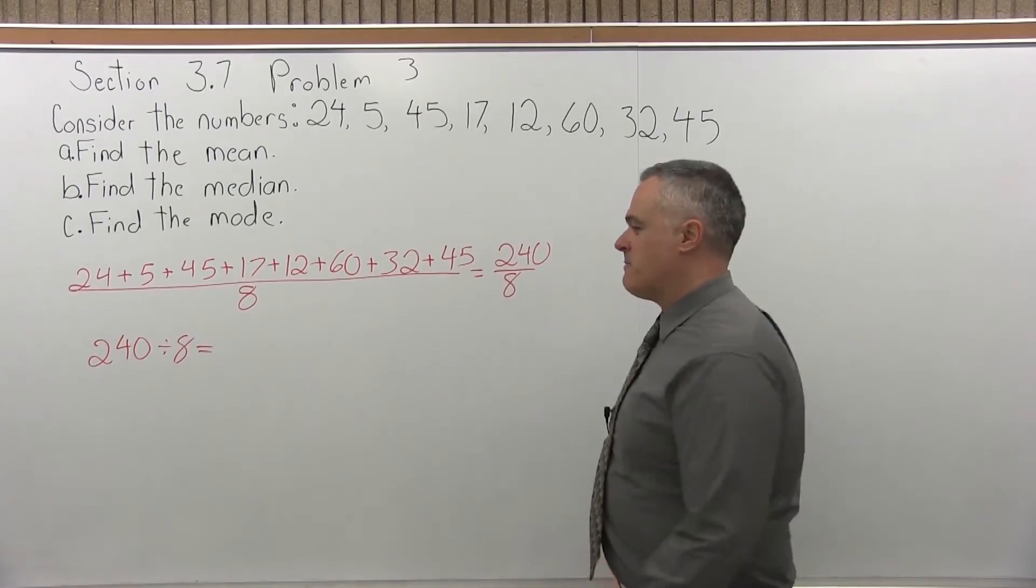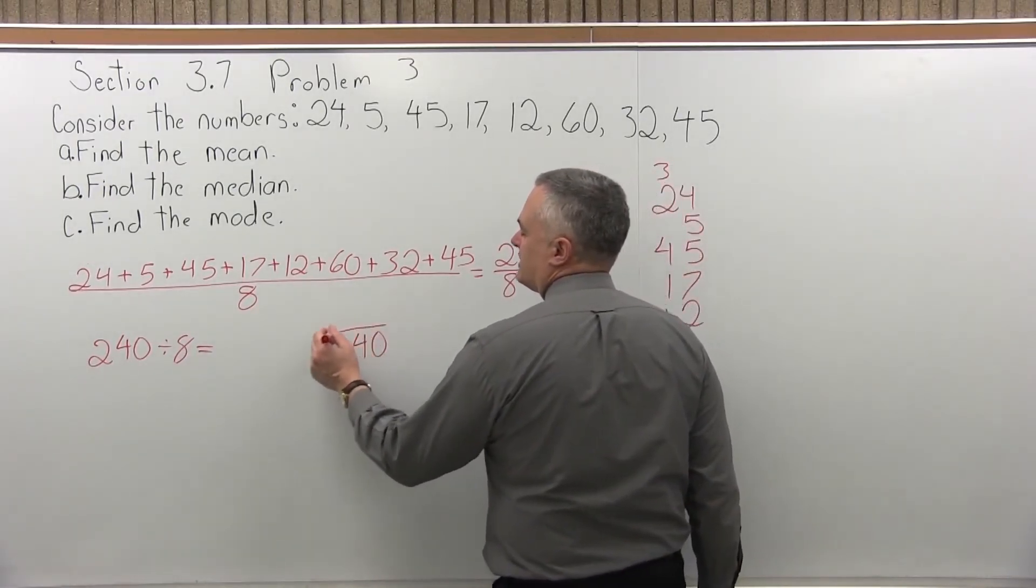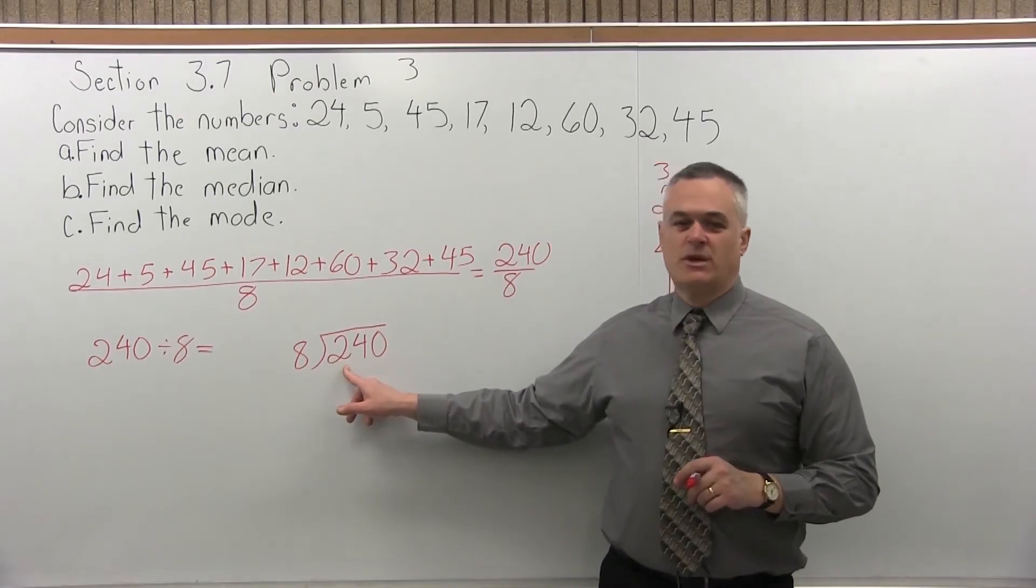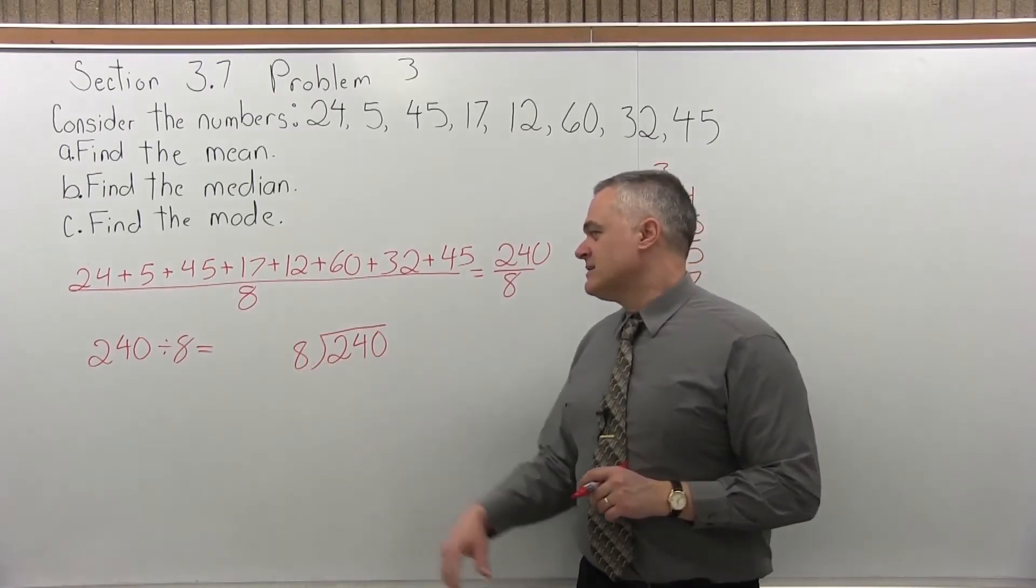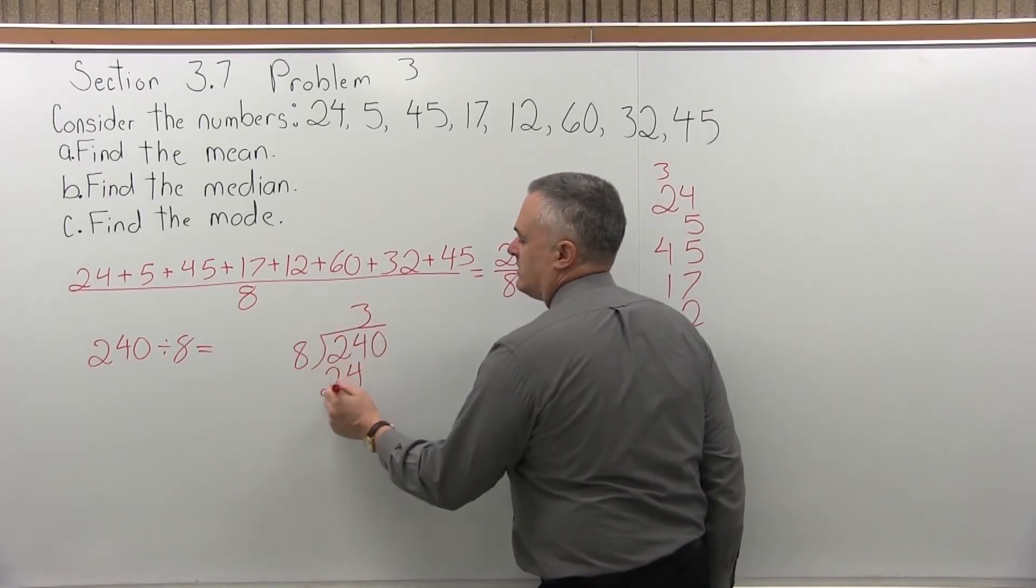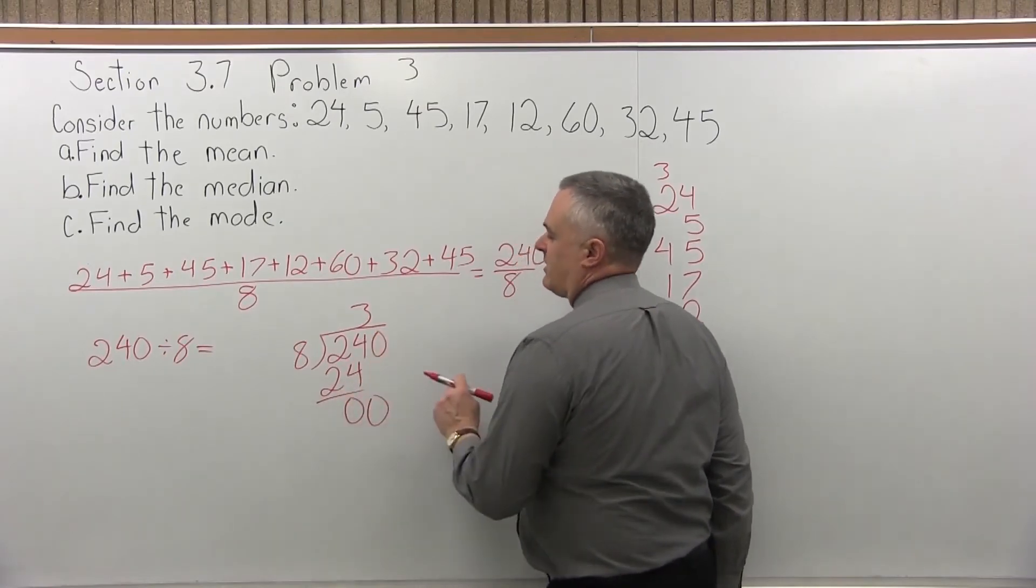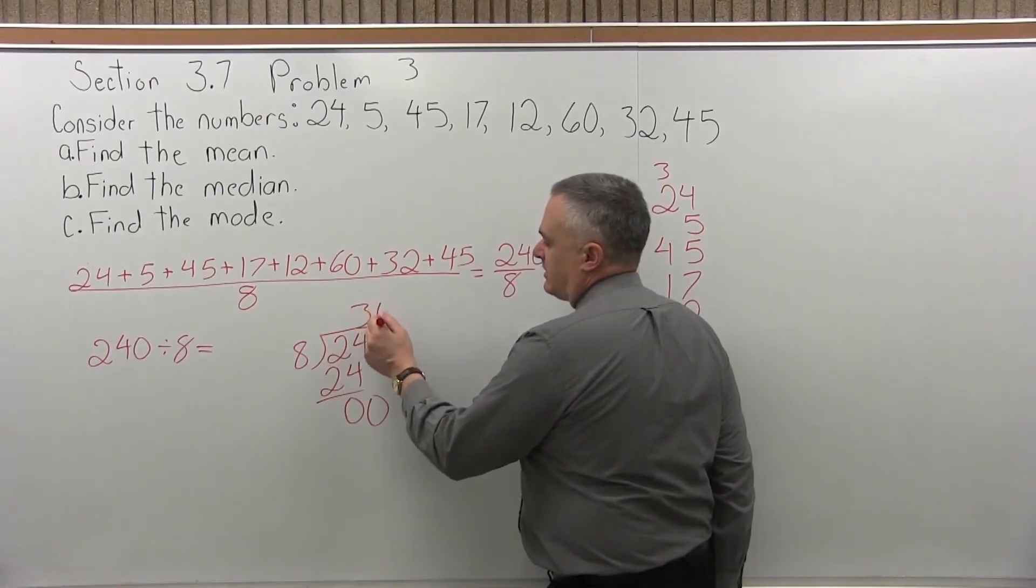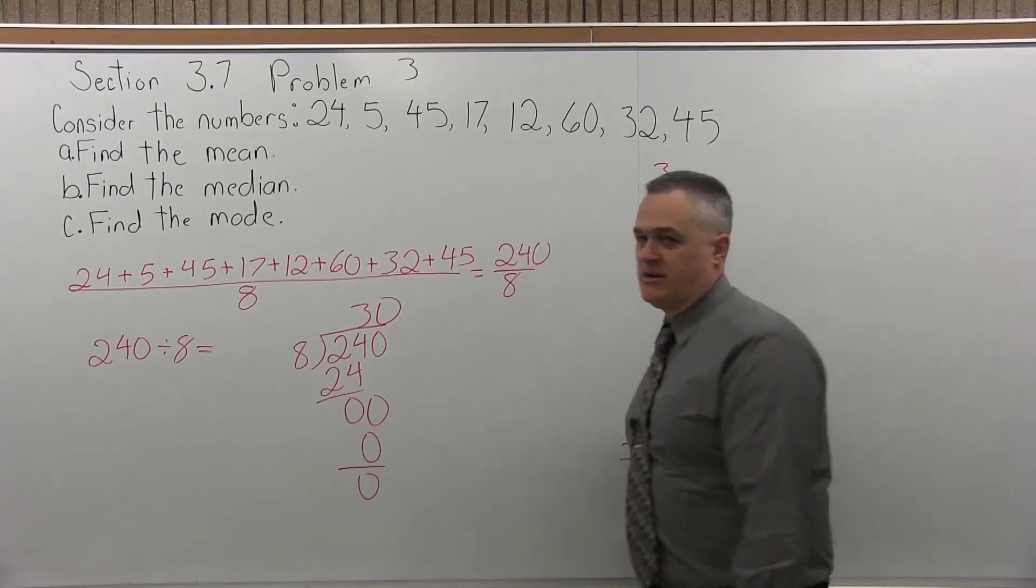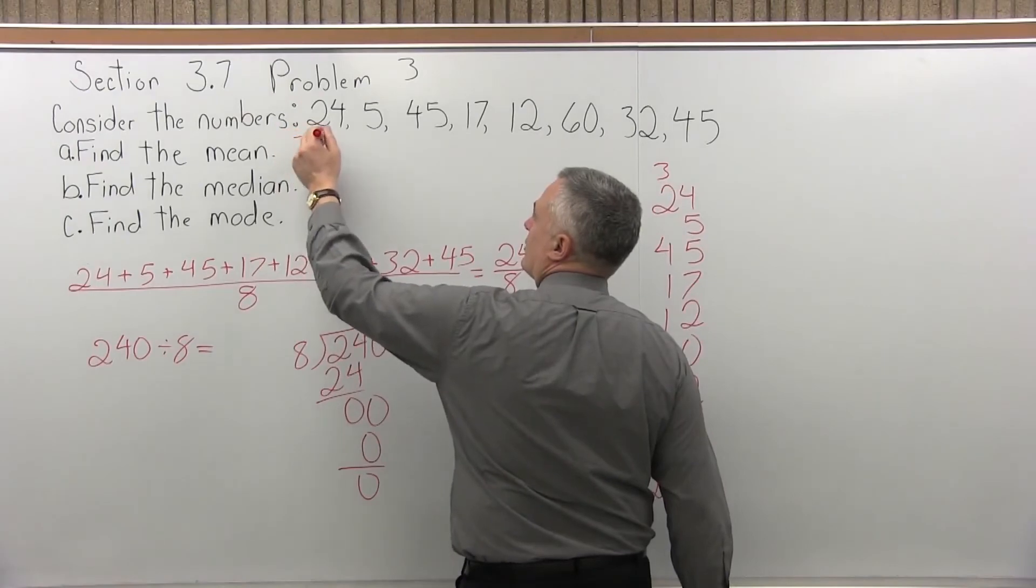Pretend you don't know. So what you would do, the 240 will go inside of your division symbol. The 8 goes in front. 8 divides into 2, 2 is not big enough. 8 won't fit. 8 divides into 24, that will fit, go in 3 times. 3 times 8 is 24. 24 minus 24 is 0. Bring down the next digit, which is also 0. 8 times something is 0, that would be 0. 8 times 0 is 0. 0 minus 0 is 0. I have no remainder. So it does go in 30 times as I thought it should. So that's the mean, 30.